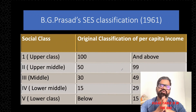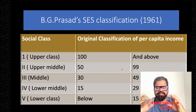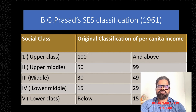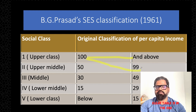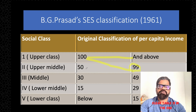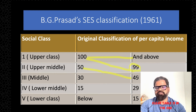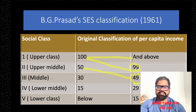To make it clear, in the original 1961 classification: if per capita income is 100 and above, it is Class 1 — Upper class. The next range is 50 to 99 — Class 2, Upper Middle. You subtract one from the lower limit to get the upper limit of the next class, so 30 to 49 is Class 3 — Middle. Lower Middle is 15 to 29, and below 15 is Class 5 — Lower class.